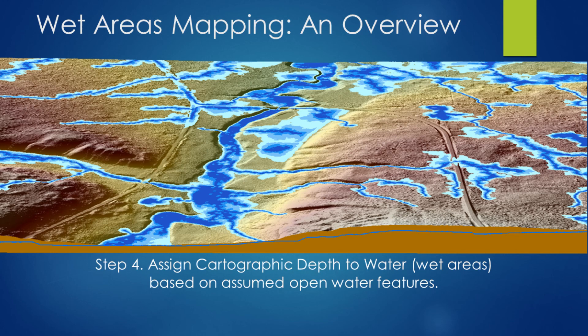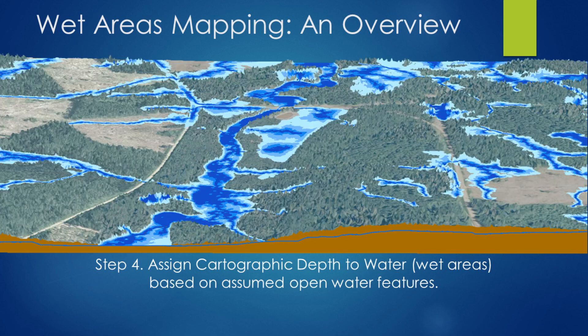It's important to remember that a depth-of-water value exists for every single one-meter cell across the landscape. This would be essentially a profile of the depth of water throughout this subsection of EMEND. And if we overlay it on top of the full-feature data set, this is essentially what an augmented reality might look like if you were to put the wet areas map on top of an ortho image.